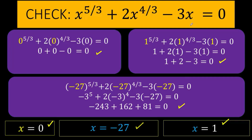So for our final answers, the roots of x raised to 5 thirds plus 2x raised to 4 thirds minus 3x equals 0 are: x equals 0, x equals negative 27, and x equals positive 1.